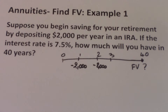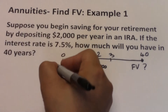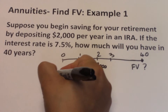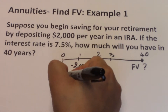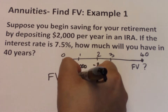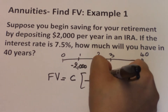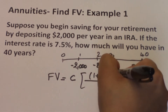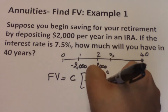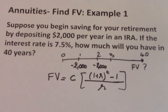This is an example of an ordinary annuity, but here we're trying to determine the future value. We know that the future value of an ordinary annuity is basically C times (1 plus R) to the power T, minus 1, over R.